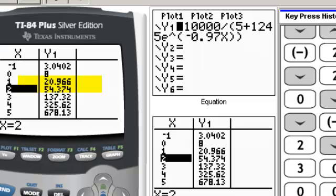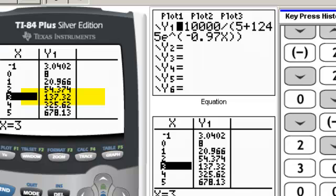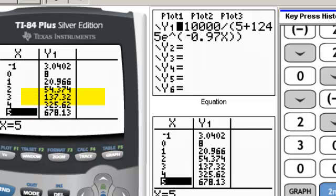Day 2, approximately 54 people. Day 3, 137. And after day 5, 678 people get the disease.